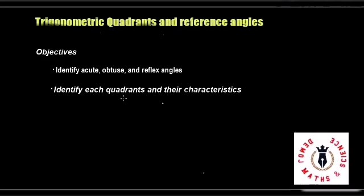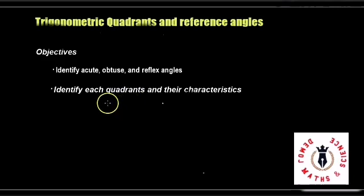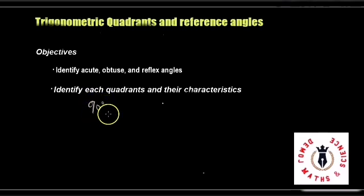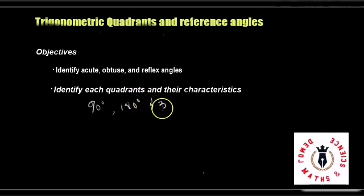But before we get started with quadrants, I want to shed more light on types of angles for the benefit of those who do not really understand the different types of angles. Standardly, we always use 90 degrees as a reference point, 180 degrees and 360 degrees.